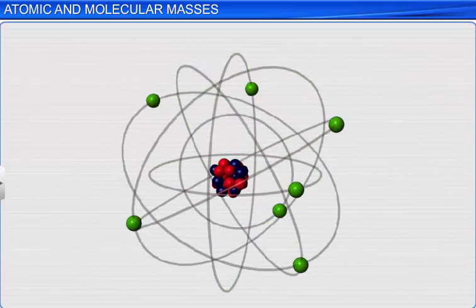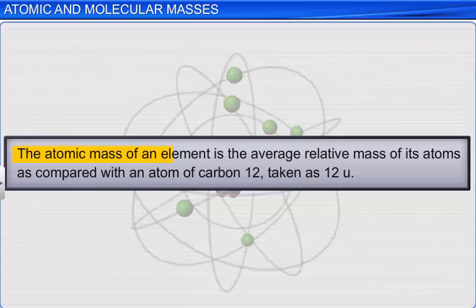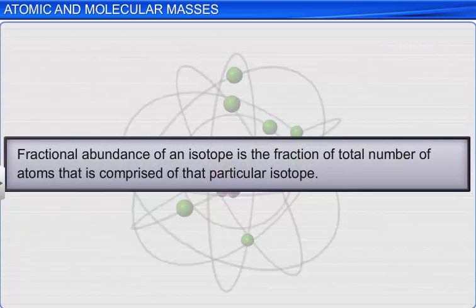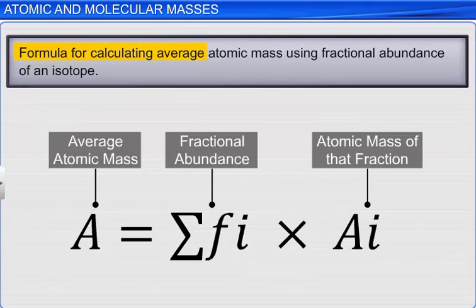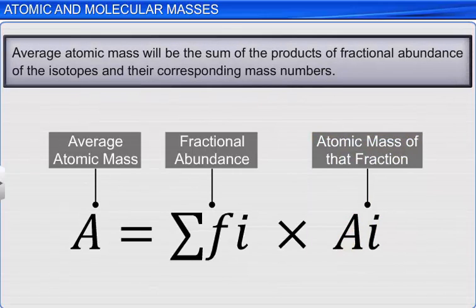Hence, the average atomic mass was redefined as: the atomic mass of an element is the average relative mass of its atoms as compared with an atom of carbon-12 taken as 12U. We can also calculate the average atomic mass using fractional abundances of isotopes of an element. Fractional abundance of an isotope is the fraction of total number of atoms that is comprised of that particular isotope. The formula for calculating average atomic mass from fractional abundance is fractional abundance multiplied by atomic mass of that fraction, and the average atomic mass is the sum of those products.